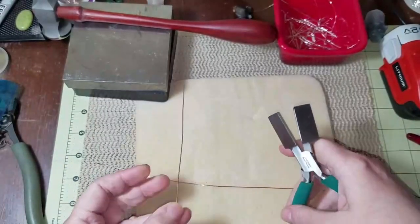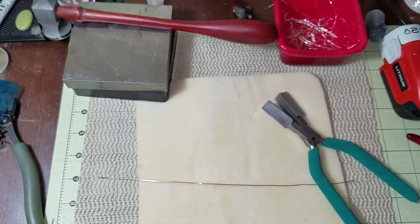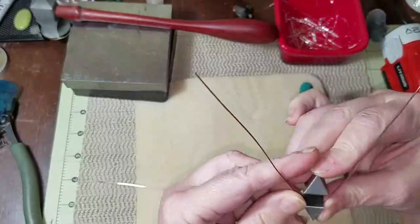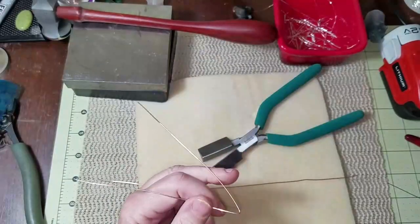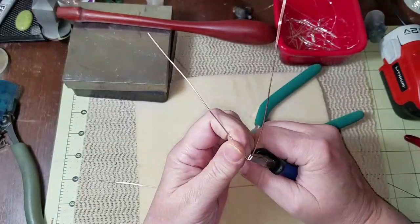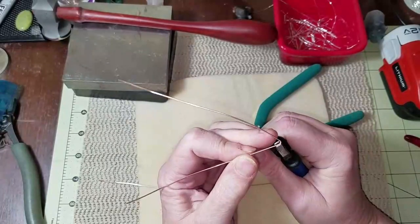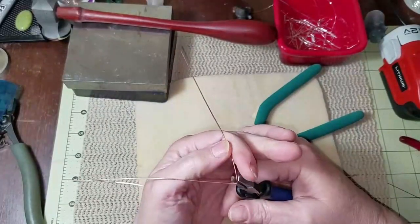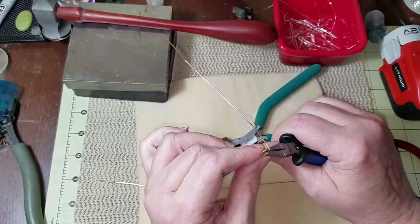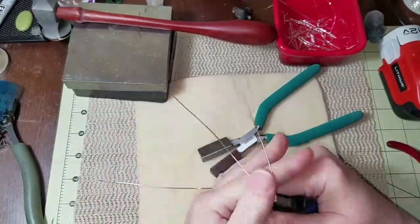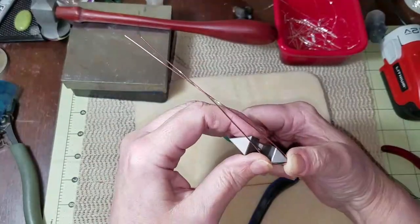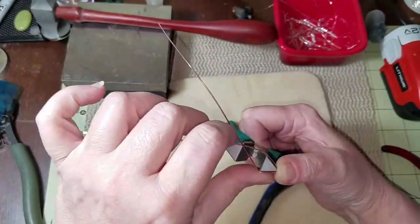I'm going to try to find the center here and place it right here. Now what I want to do is get this a sharper point, so you just take your flat nose pliers and pinch it back and forth until you get the angle that you want. Bend that slightly that way, bend this one slightly this way.